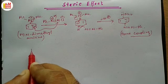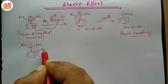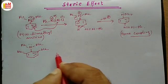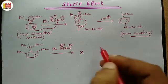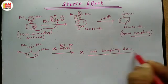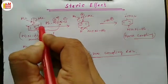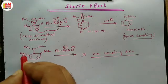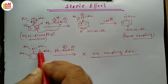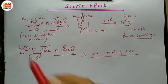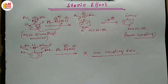Now, if in place of NN-dimethylaniline we have a system where the two hydrogens are replaced by two methyl groups on nitrogen, and we apply the same reagent, there will be no coupling reaction. The difference between these two structures is only here: these two are hydrogens and here these two are methyl groups. In comparison with hydrogen, the methyl group is more bulky.